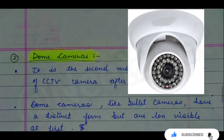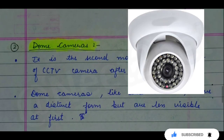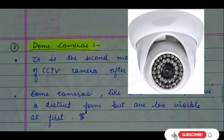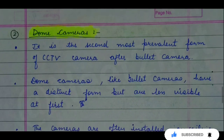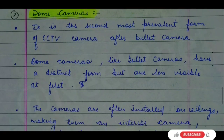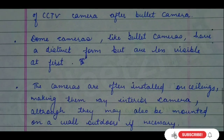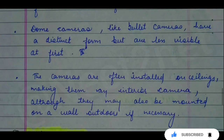The second type is dome cameras. After bullet cameras, dome cameras are the next most common CCTV camera. These are dome-shaped cameras. Like bullet cameras, they are recognizable, but not as visible as bullet cameras. We install them on the ceiling and use them inside buildings, such as inside a house. We can also mount them on walls.